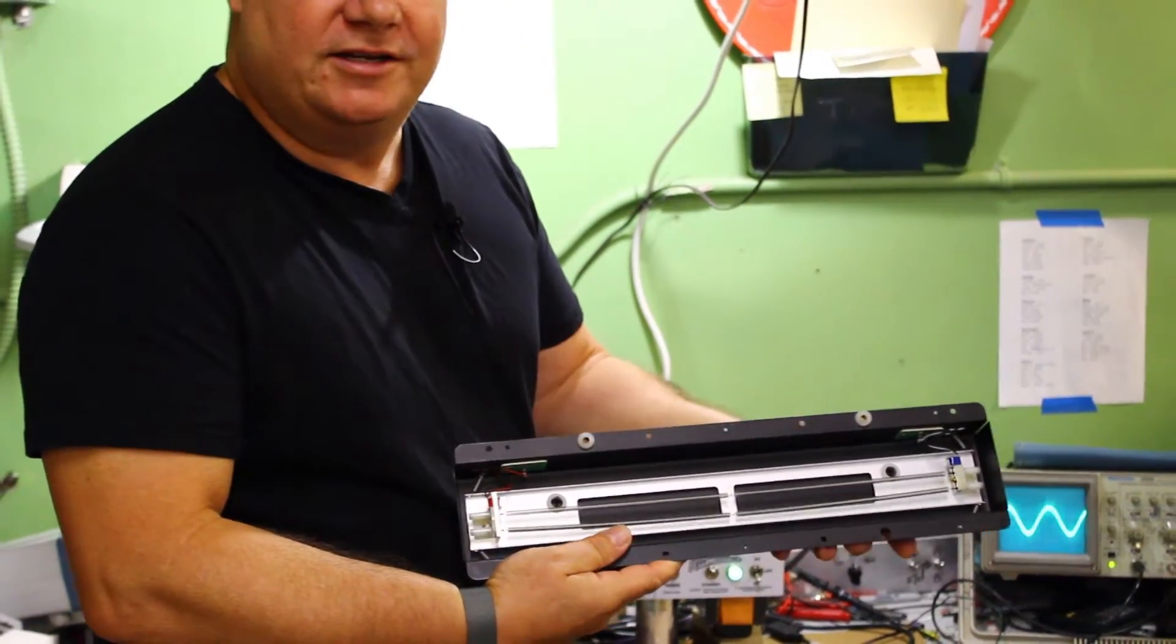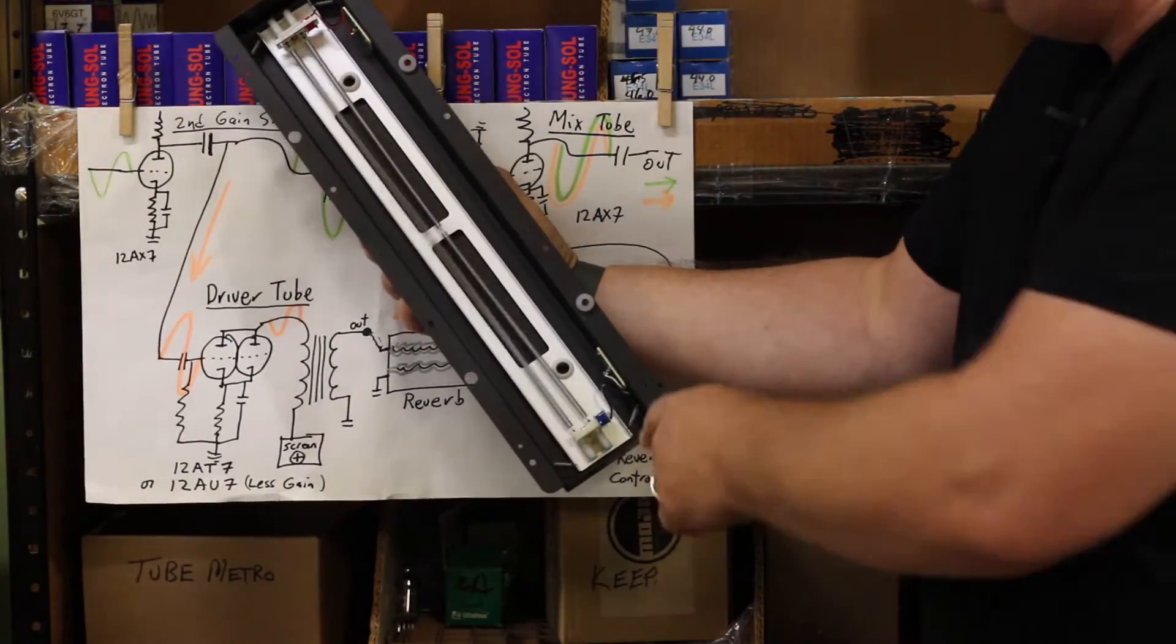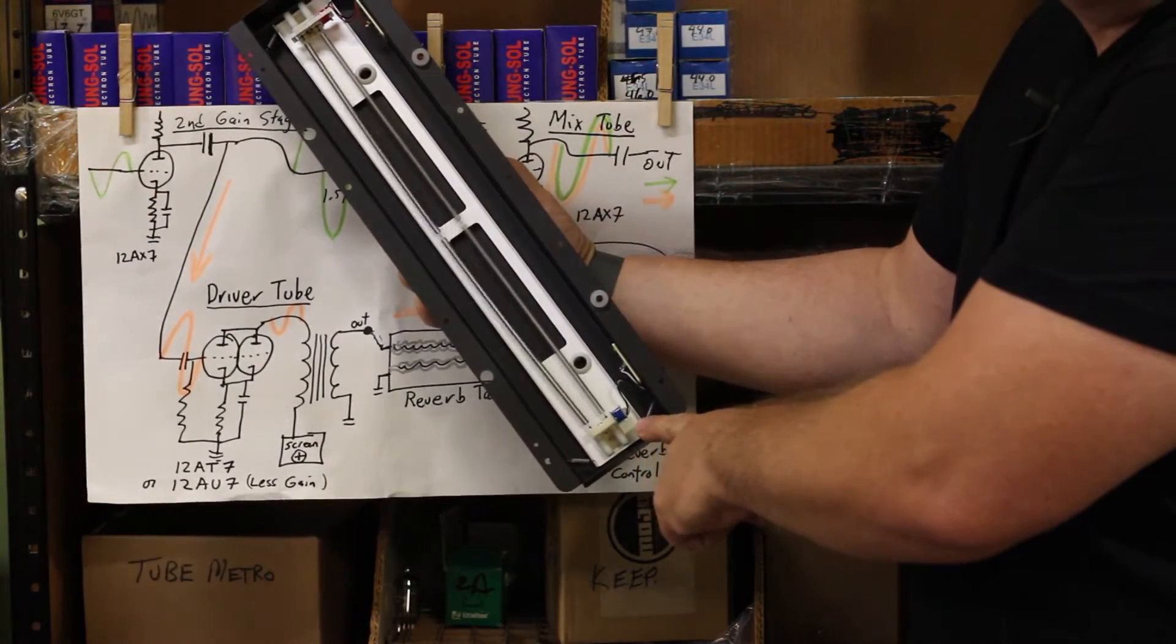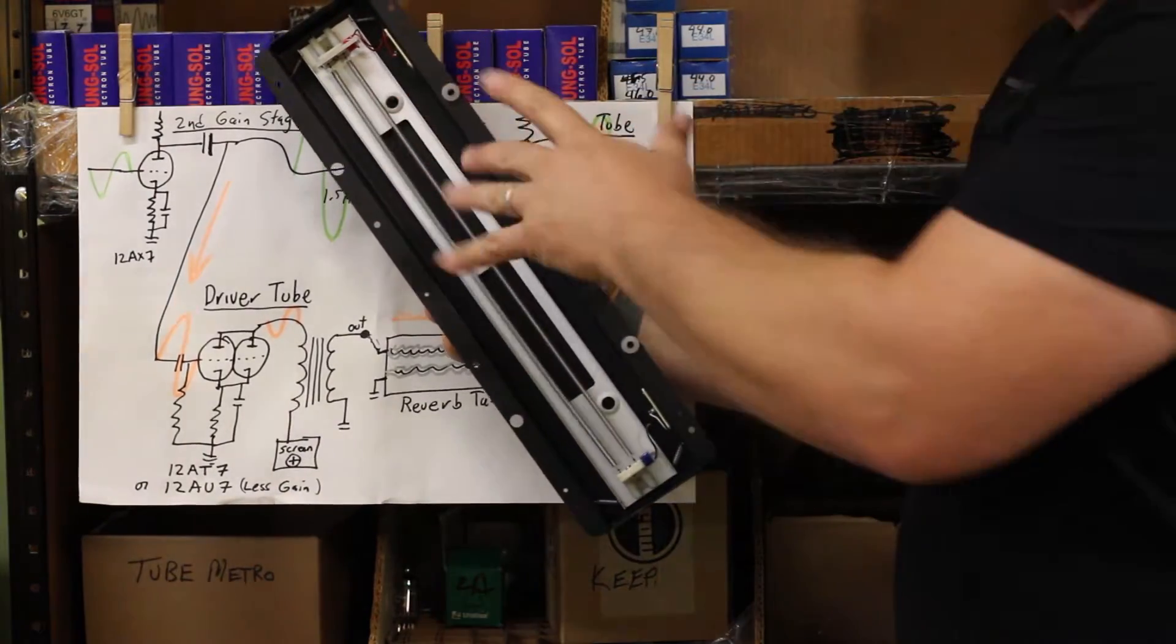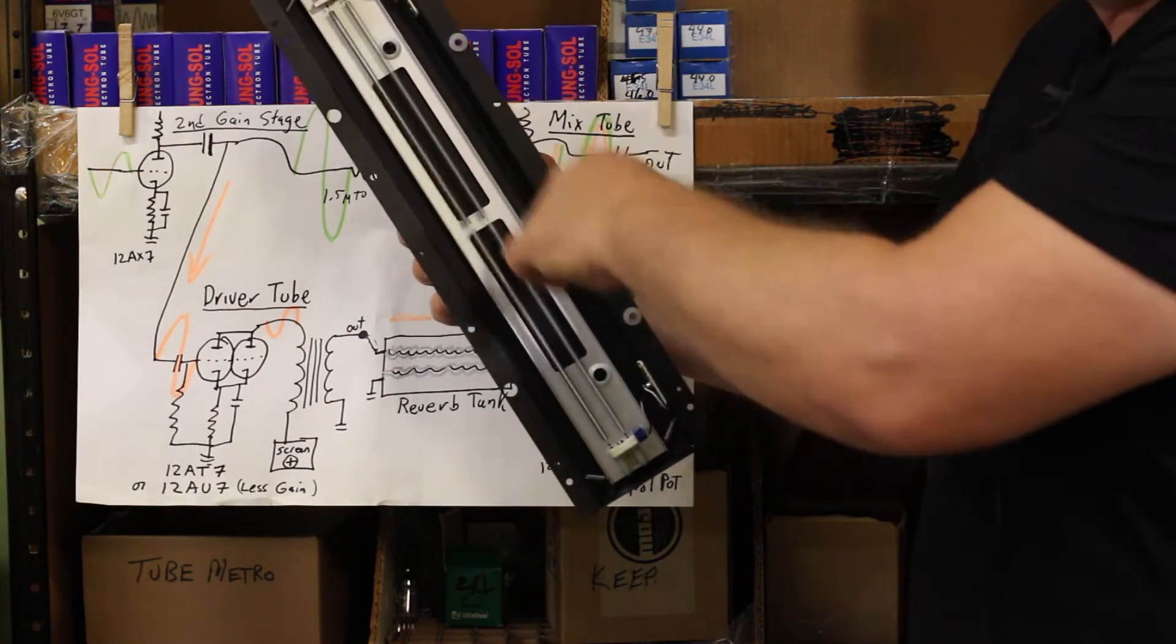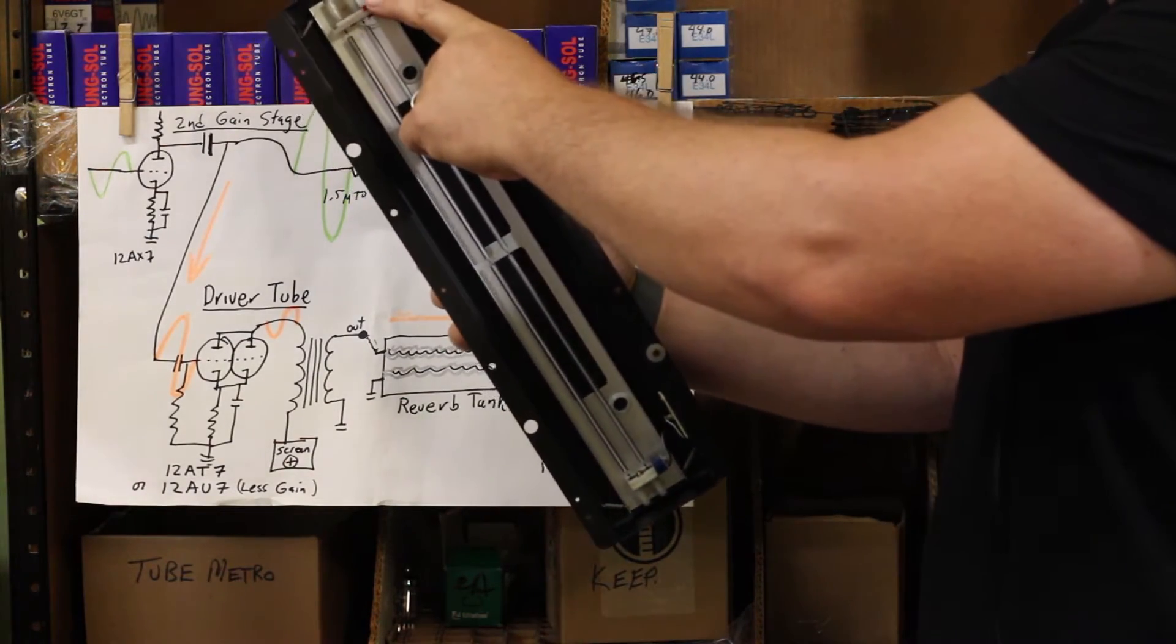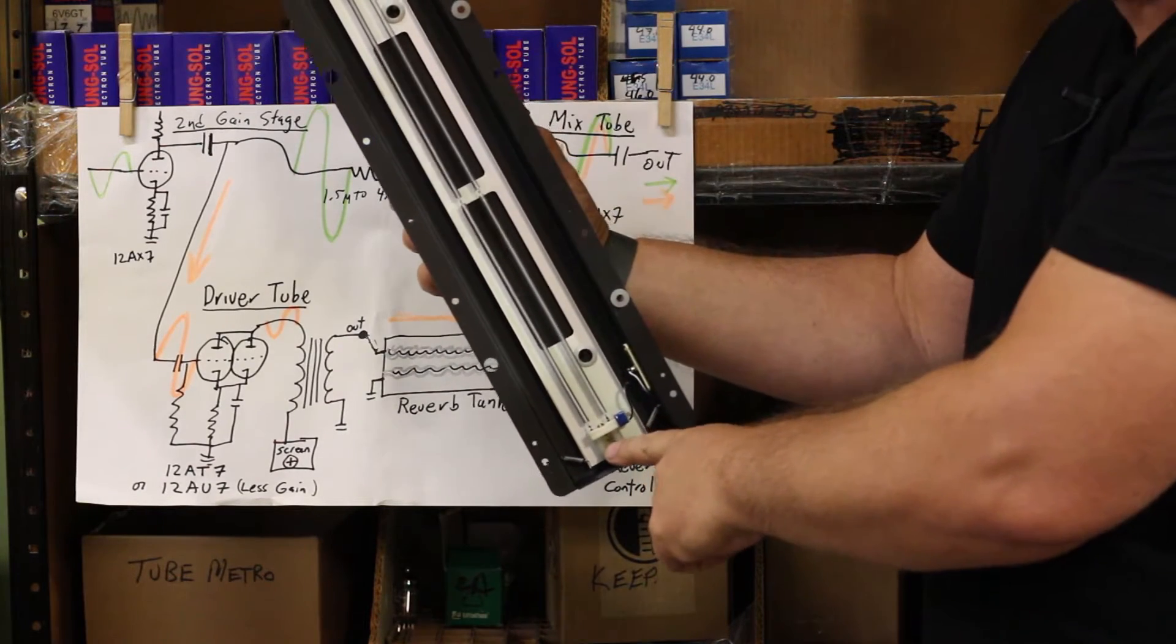This is what it looks like inside. If you can see, there's a couple of transducers, little transformers, and they take your guitar signal and they wiggle these springs. The time delays and modulations and craziness goes from the drive side to the return side back in your amp.